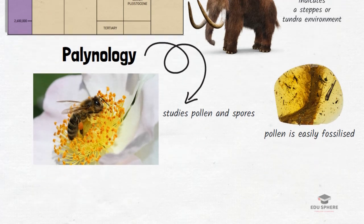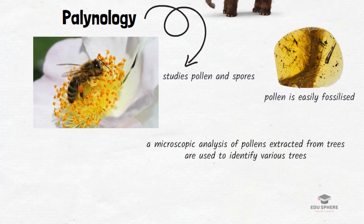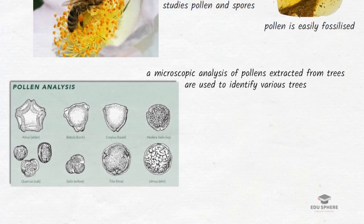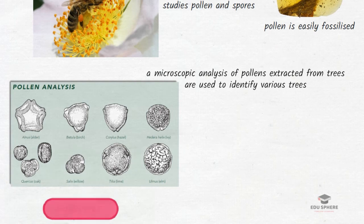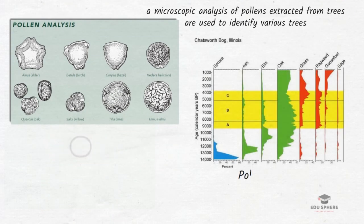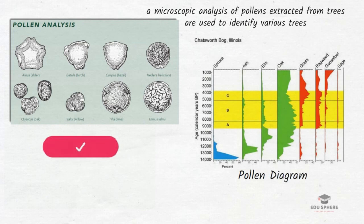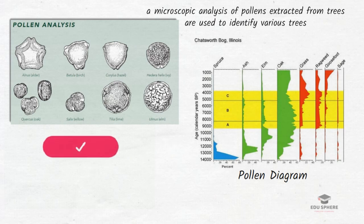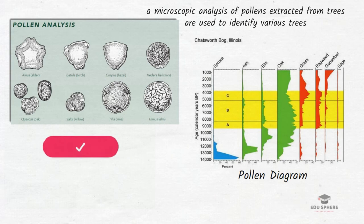The preservation of pollen in bogs and lake sediments has allowed pollen experts to construct detailed sequences of past vegetation and climate. A microscopic analysis of pollen extracted from trees is used to identify various tree species, and a pollen diagram is prepared. While palynology cannot produce an exact picture of past environments, it gives some idea of fluctuations in vegetation through time. Using collected data, a pollen diagram is drawn in which relative frequencies of various species are plotted.